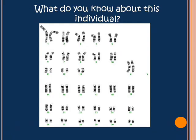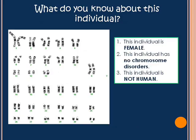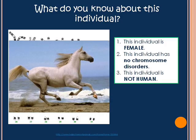Take a second — what can you figure out about this individual? You should have seen we've got a female with no chromosome disorders and definitely not human. When you've got 32 pairs of chromosomes, you're actually a horse.